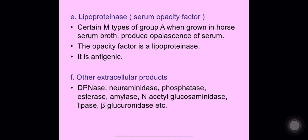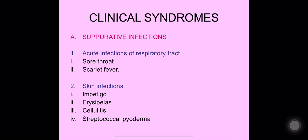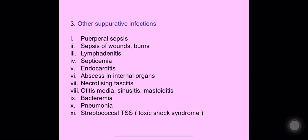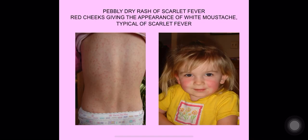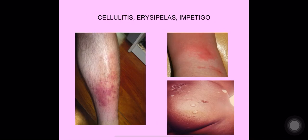Clinical syndromes caused by streptococci include suppurative infections: acute respiratory tract infections such as sore throat and scarlet fever; skin infections including impetigo, erysipelas, cellulitis, and streptococcal pyoderma; and other suppurative infections such as puerperal sepsis, wound infections, lymphadenitis, septicemia, endocarditis, necrotizing fasciitis, otitis media, sinusitis, pneumonia, bacteremia, and streptococcal toxic shock syndrome. Photographs show streptococcal sore throat, scarlet fever with pebbly dry rash, red cheeks with white mustache appearance, cellulitis, erysipelas, and impetigo.